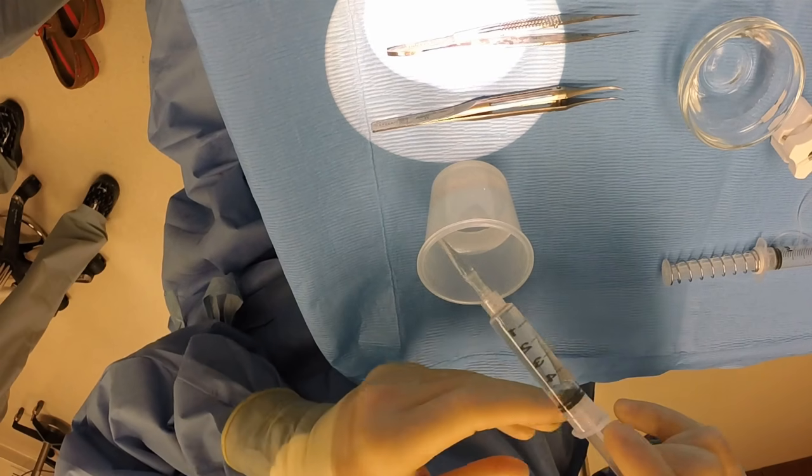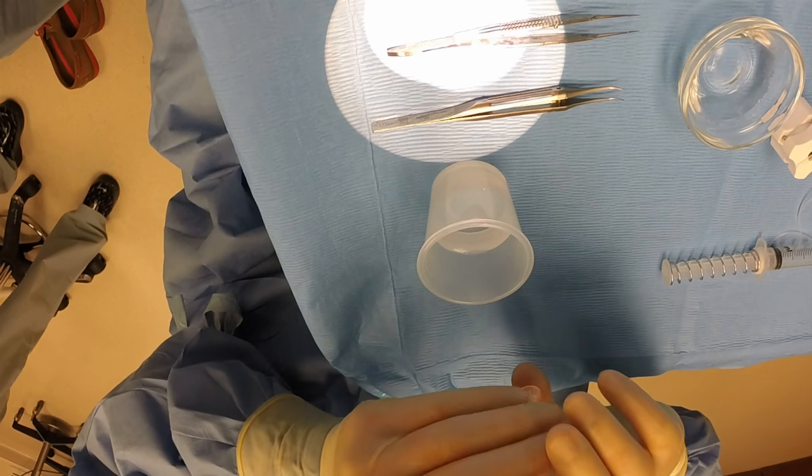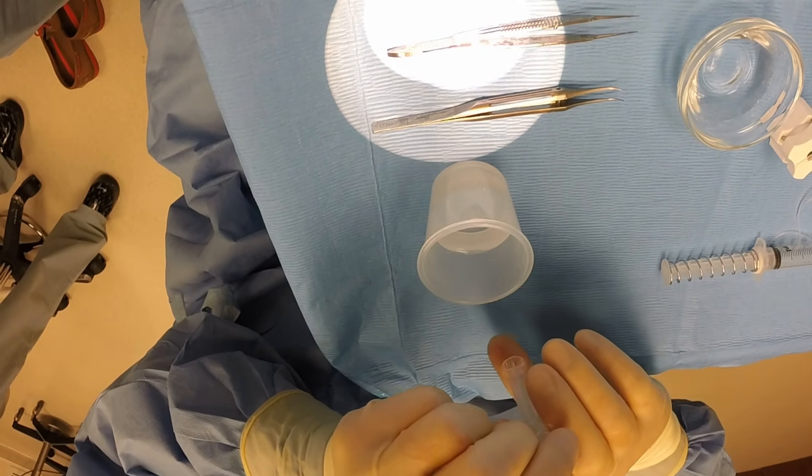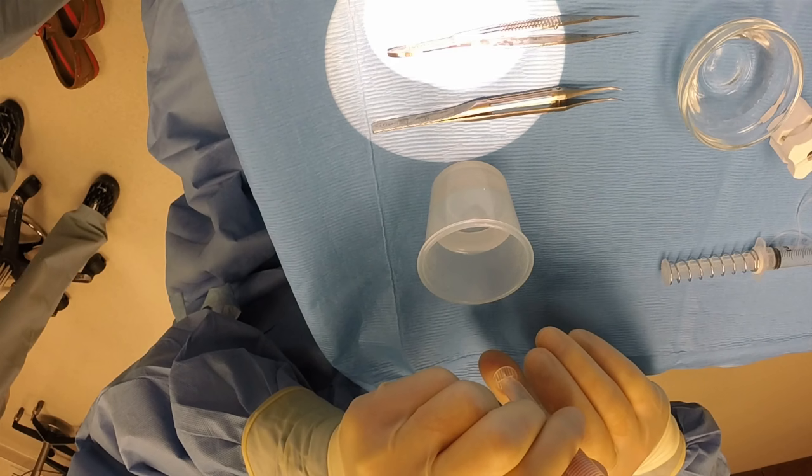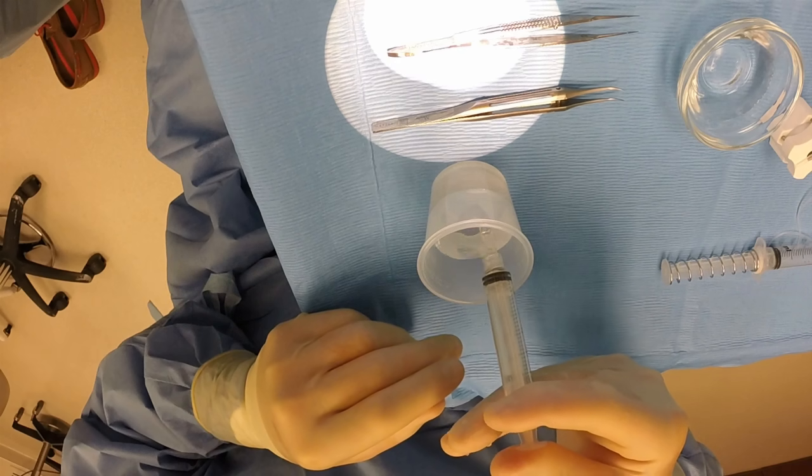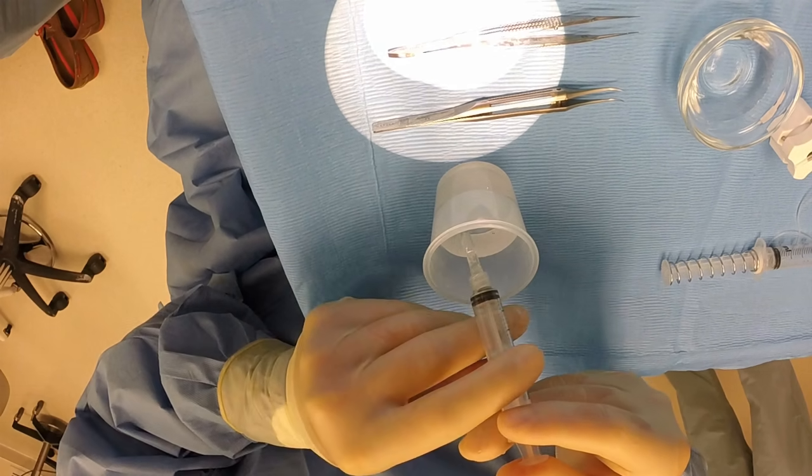I then draw up about 3 to 4 cc's of BSS and try to eliminate all the air bubbles. I flush it thoroughly several times to eliminate every last air bubble, which can be problematic if air goes into the eye at the same time as the donor tissue.